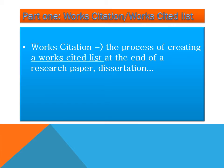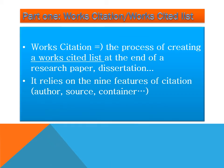Work citation is the process of creating a works cited list — also called references — at the end of your research paper, dissertation, or PhD thesis. This process relies on the nine features of citation discussed before. For revision: author and title of the source are the lead information. The other seven features belong to Container One, or the academic container: title of container, other contributors, version, number, publisher, publication date, and location.